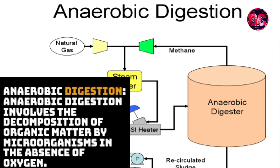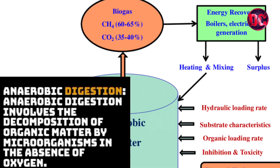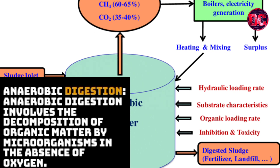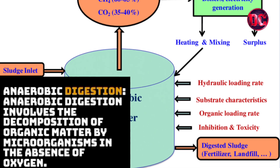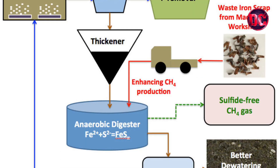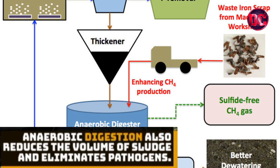Anaerobic digestion involves the decomposition of organic matter by microorganisms in the absence of oxygen. This process produces biogas, mainly methane and carbon dioxide, which can be captured and used as an energy source. Anaerobic digestion also reduces the volume of sludge and eliminates pathogens.